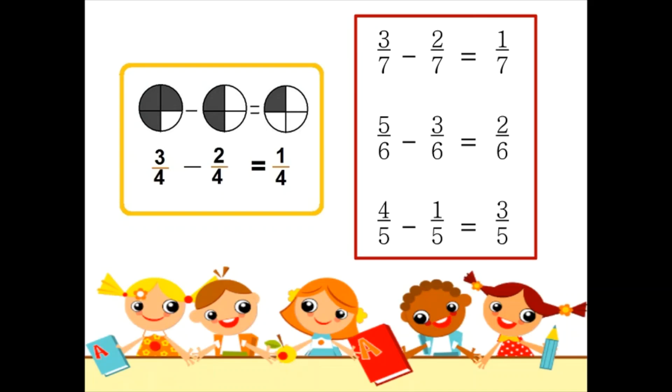4 by 5 minus 1 by 5. So it will be equal to 4 minus 1 by 5 which is equal to 3 by 5.